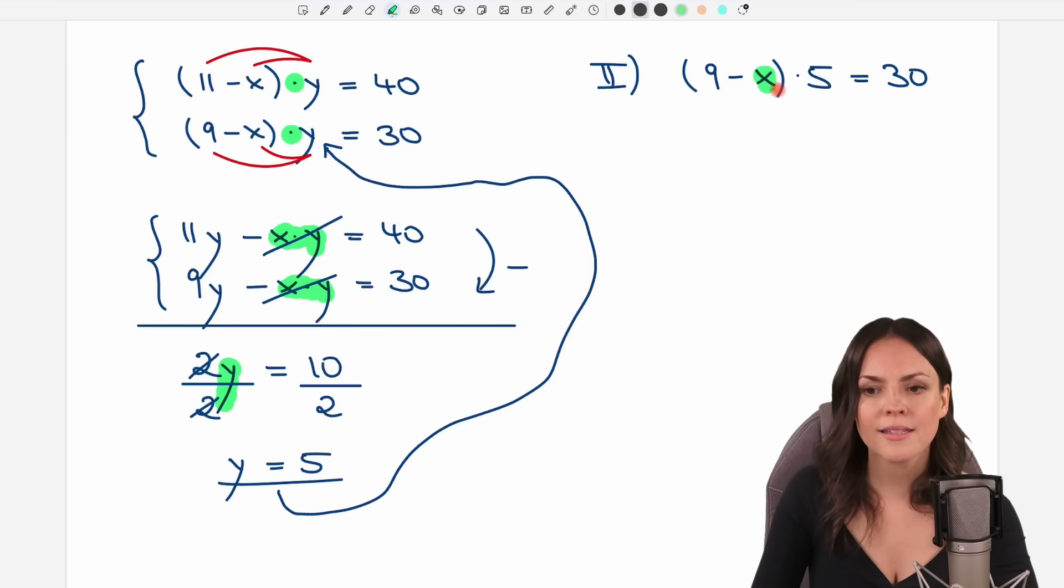Let's solve for x. Maybe we divide by 5 first so that the 5 cancels out on this side here and then we only have 9 minus x on the left side and on the right side 30 over 5 equals 6.